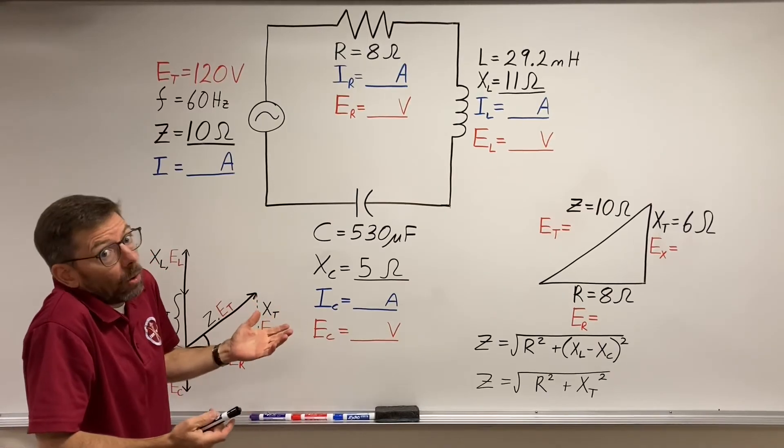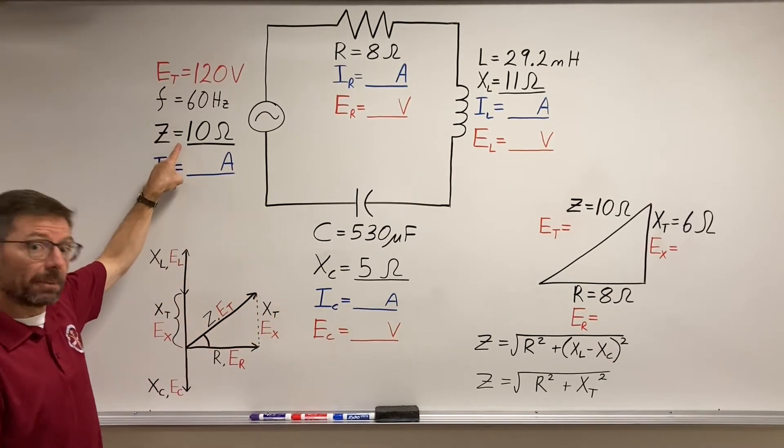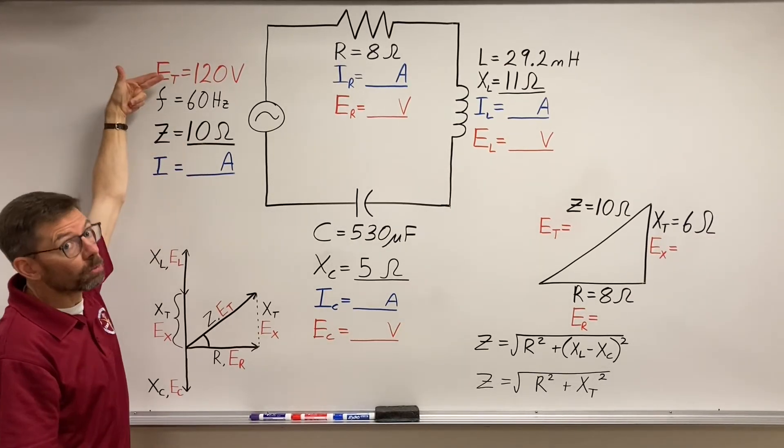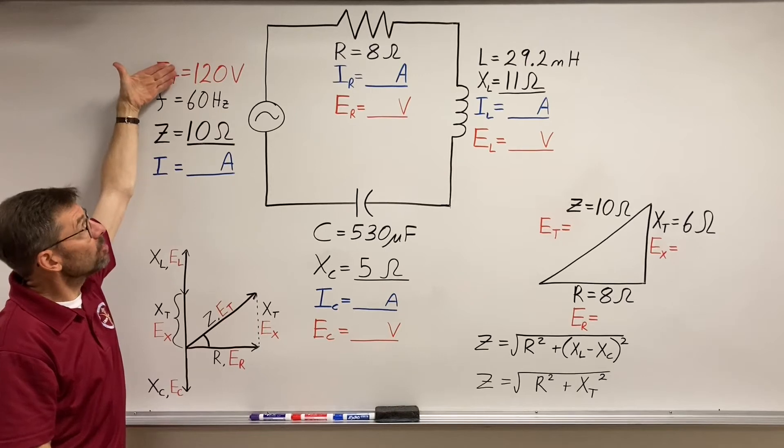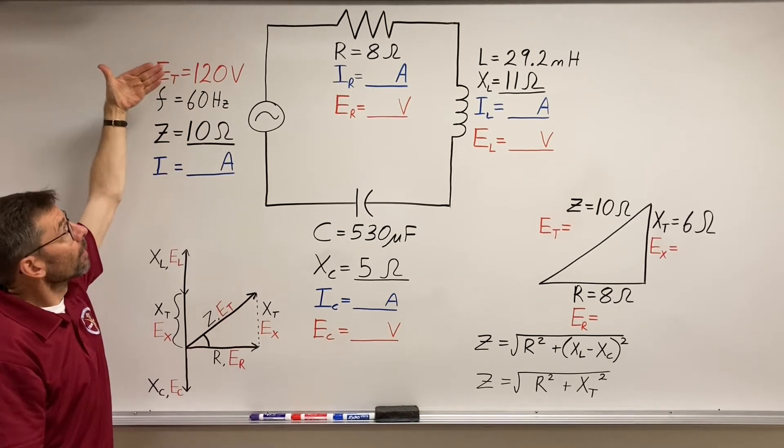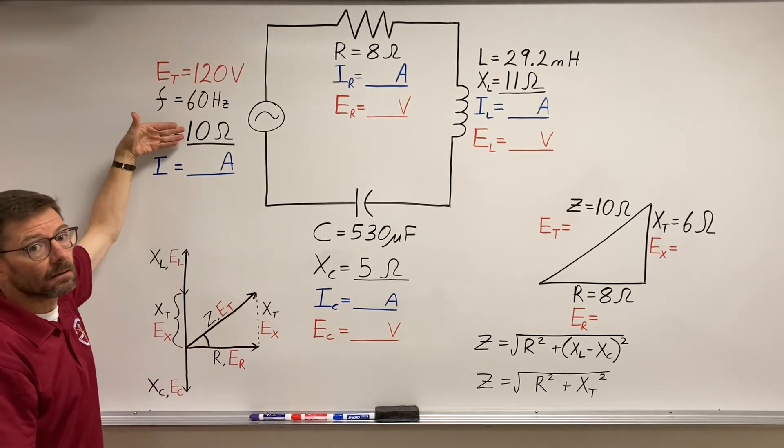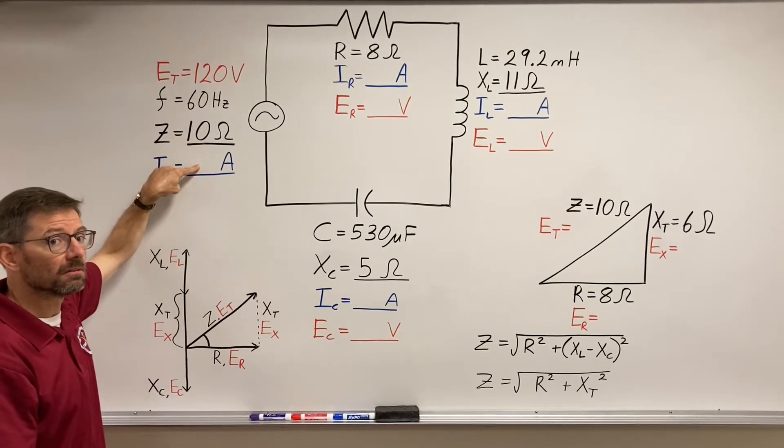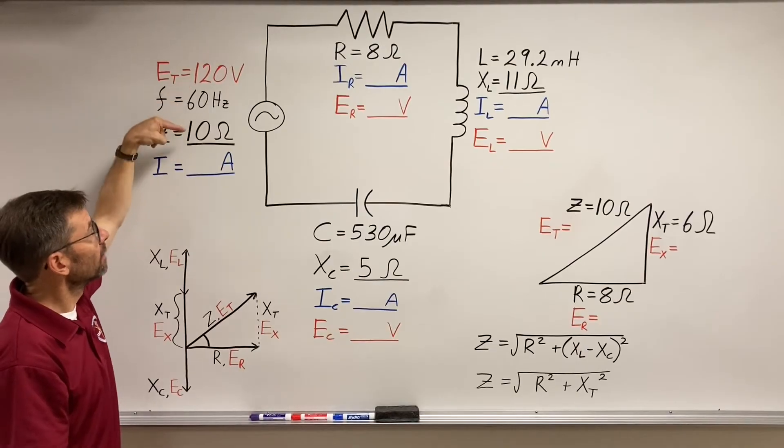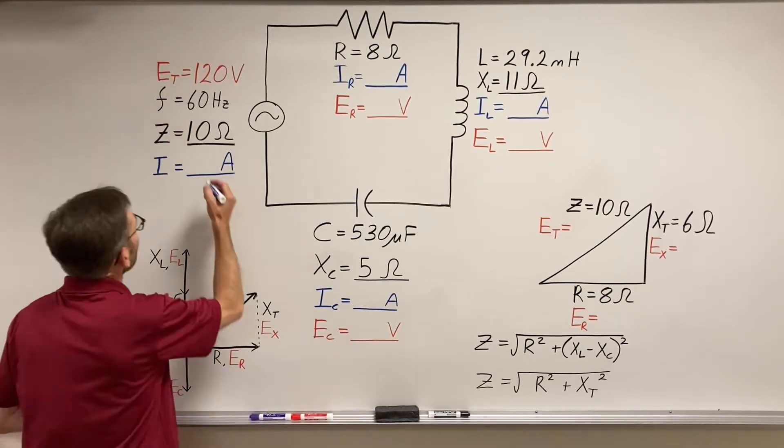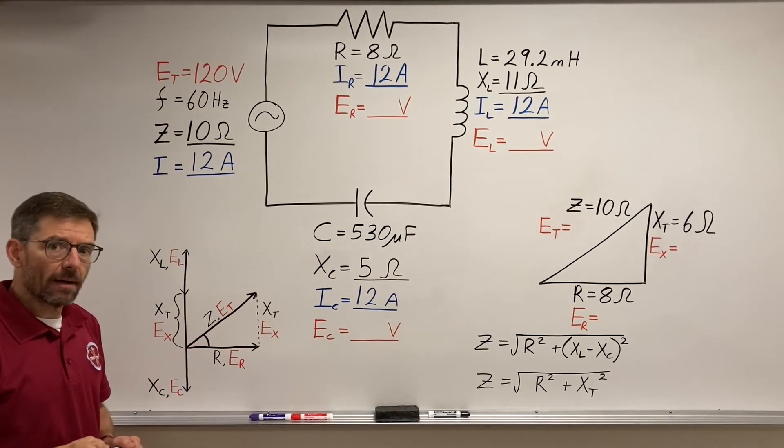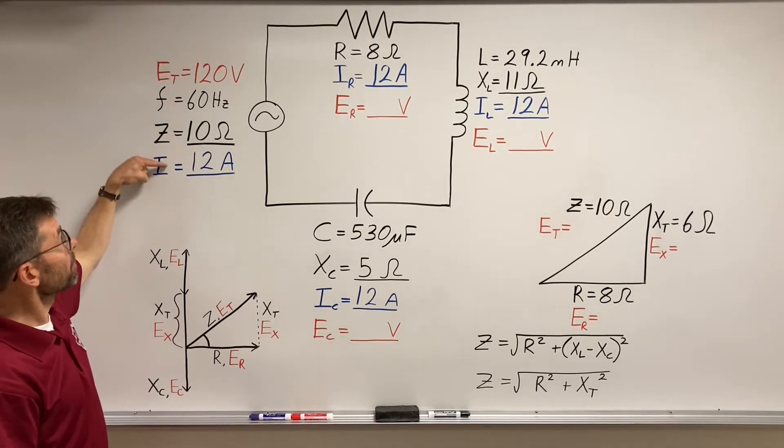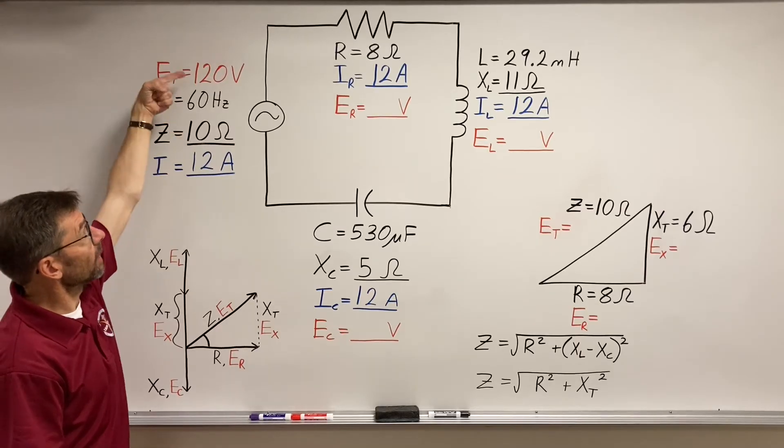So that's my impedance. When we know now that once I have my total circuit impedance in a series circuit, my total circuit ohms, I can simply use Ohm's law, take my voltage, source voltage, divided by my total impedance, and I'm going to get my current. 120 divided by 10. There we have it, 12 amps. Or you could double-check your work. Amps times ohms, 12 times 10 equals volts.